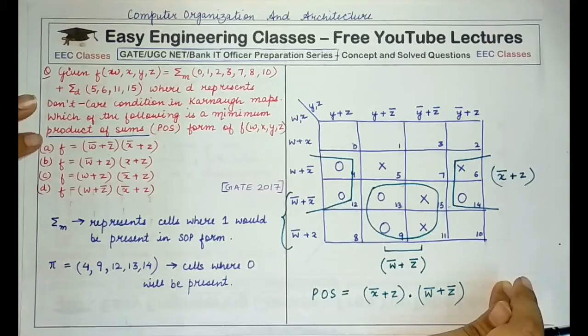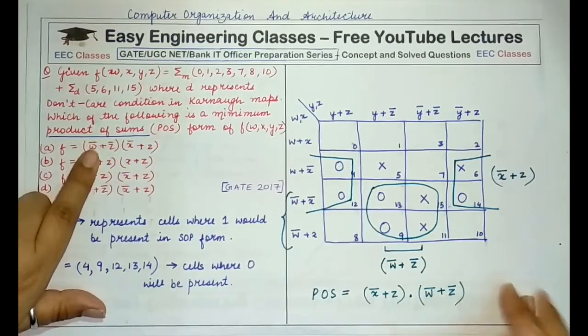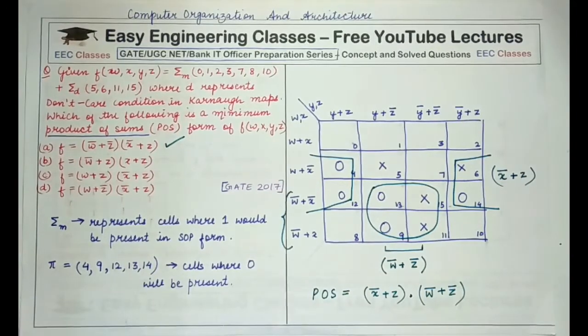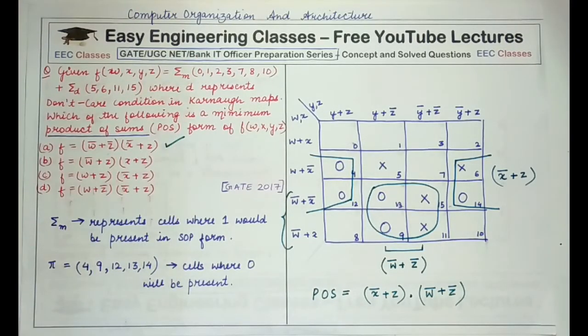Now let's see which option corresponds to this: X' + Z and W' + Z'. So it is the first option itself. So that is the answer for this question. It is a very simple question in which you have to draw the Karnaugh map, find the groups, and find out the expression. But the only trick was that this is a sigma specification, so if you directly fill in these cells and combine the groups, you'll find an SOP representation.